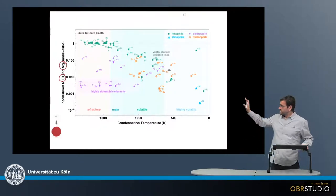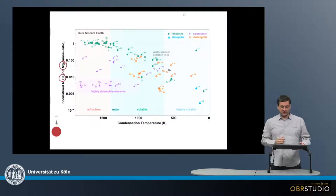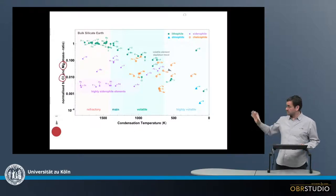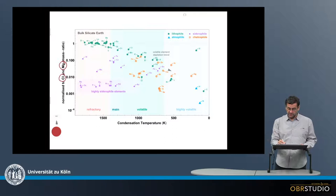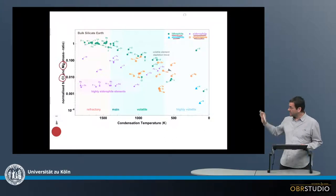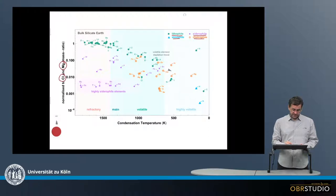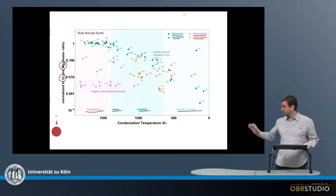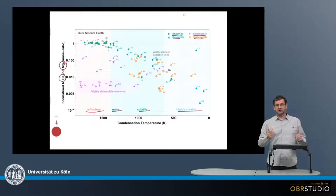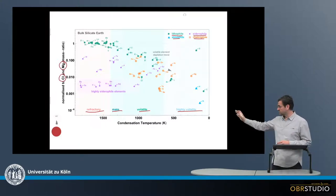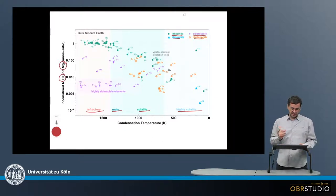Further, the geochemical characteristics of the elements are color-coded here: the lithophile elements, the siderophile elements, chalcophile and atmophile elements. Finally, this plot is discriminated into the refractory, main, volatile and highly volatile elements. This cosmochemical characteristic is directly related to the 50% condensation temperature.